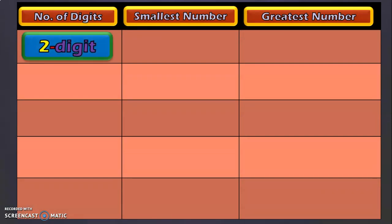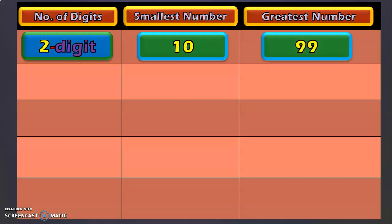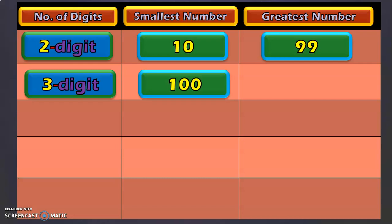For a 2 digit number, the smallest 2 digit number is 10 and the greatest 2 digit number is 99 — we learned about this in class 1. In class 2, we dealt with 3 digit numbers. The smallest 3 digit number is 100, and the greatest 3 digit number is 999.